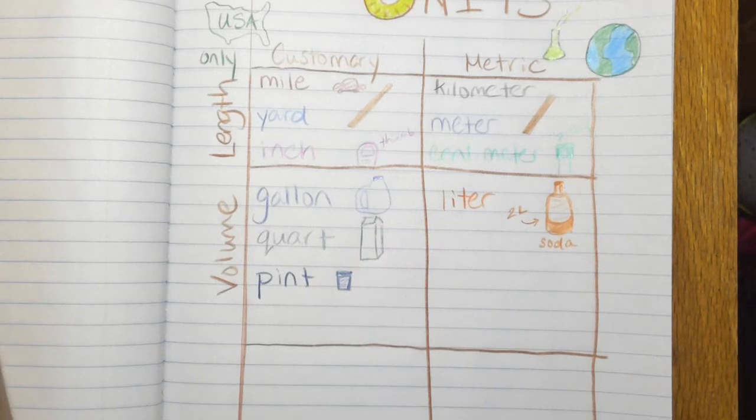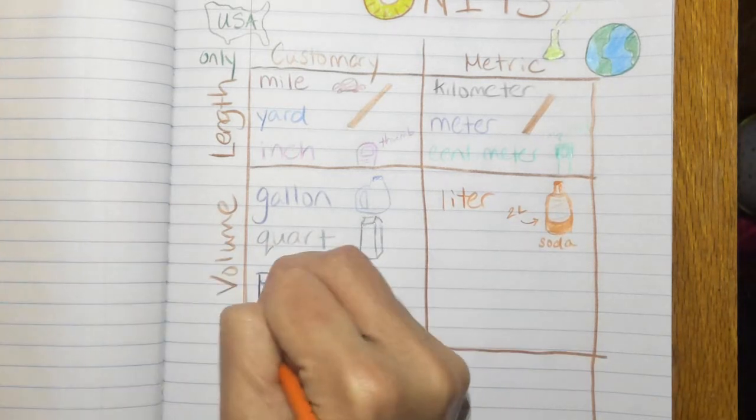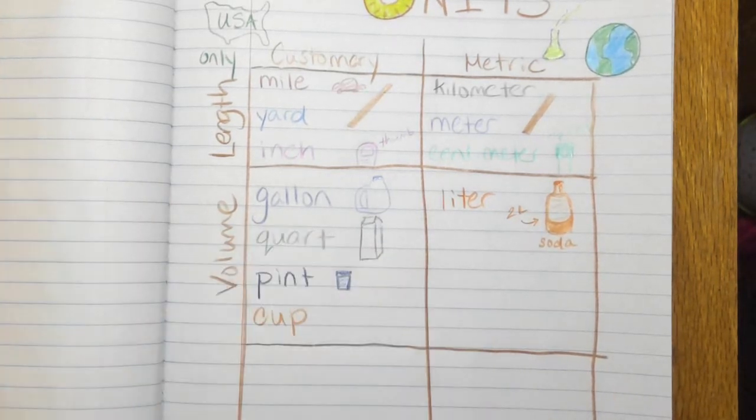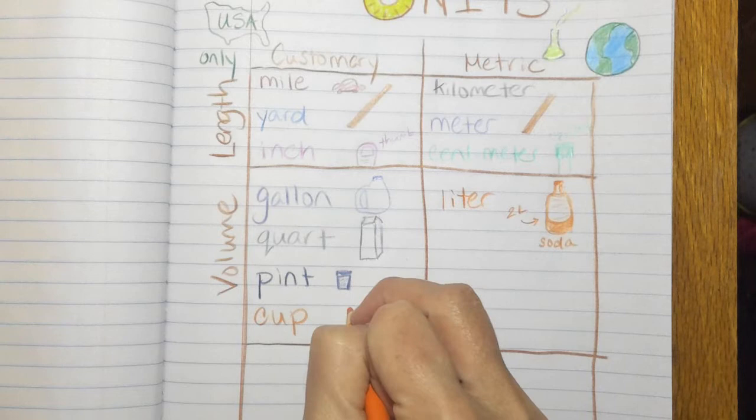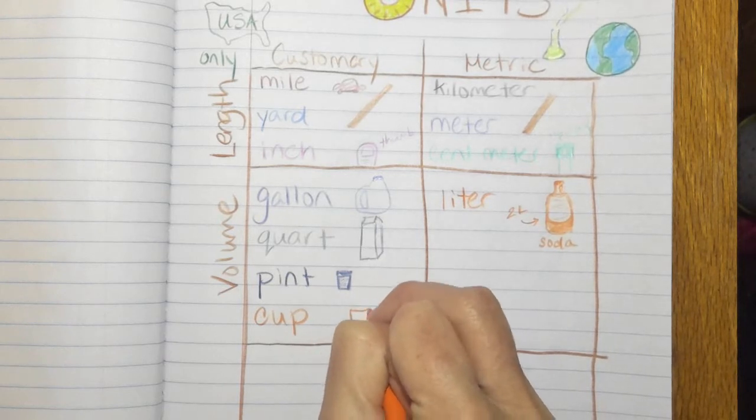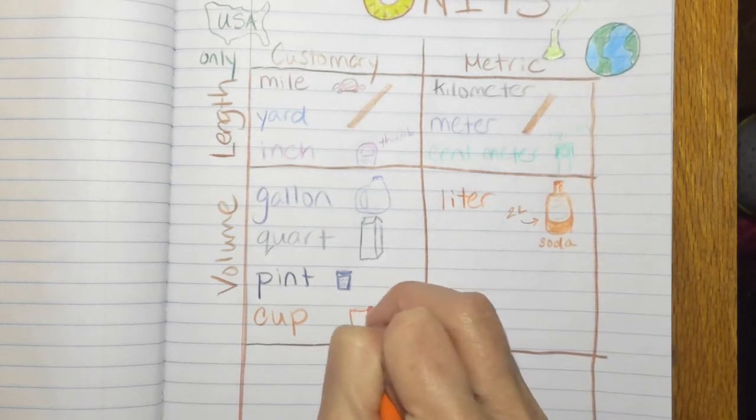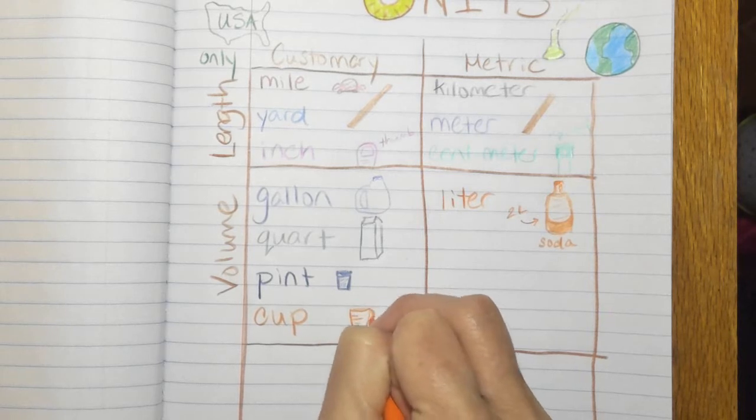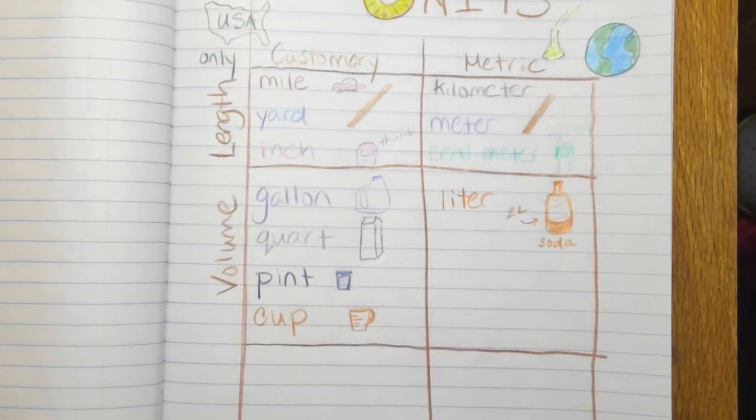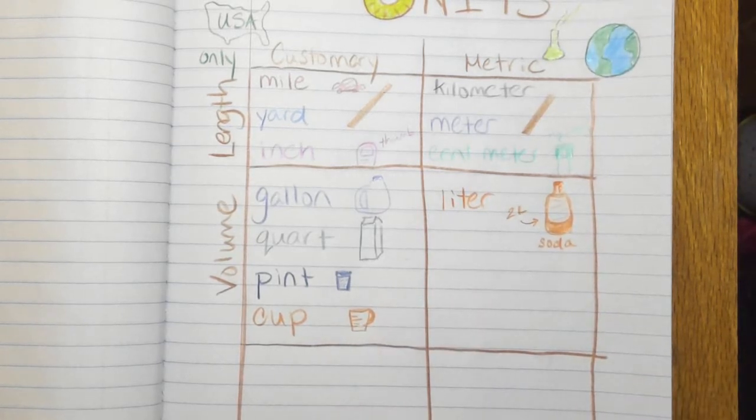And then we also have a cup. And a cup, like if you think about a measuring cup, you actually use cups a lot in measuring. So you know a recipe might call for one cup or two cups of milk or sugar or whatever.